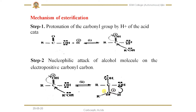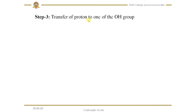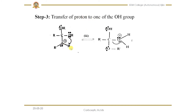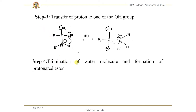To restore stability, in the third step, transfer of a proton to the hydroxyl group takes place. This hydrogen is accepted by the hydroxyl group — its lone pair of electrons accepts the proton — and as a result the positive charge shifts to the other oxygen. We now need to determine what further changes are needed to obtain the ester.